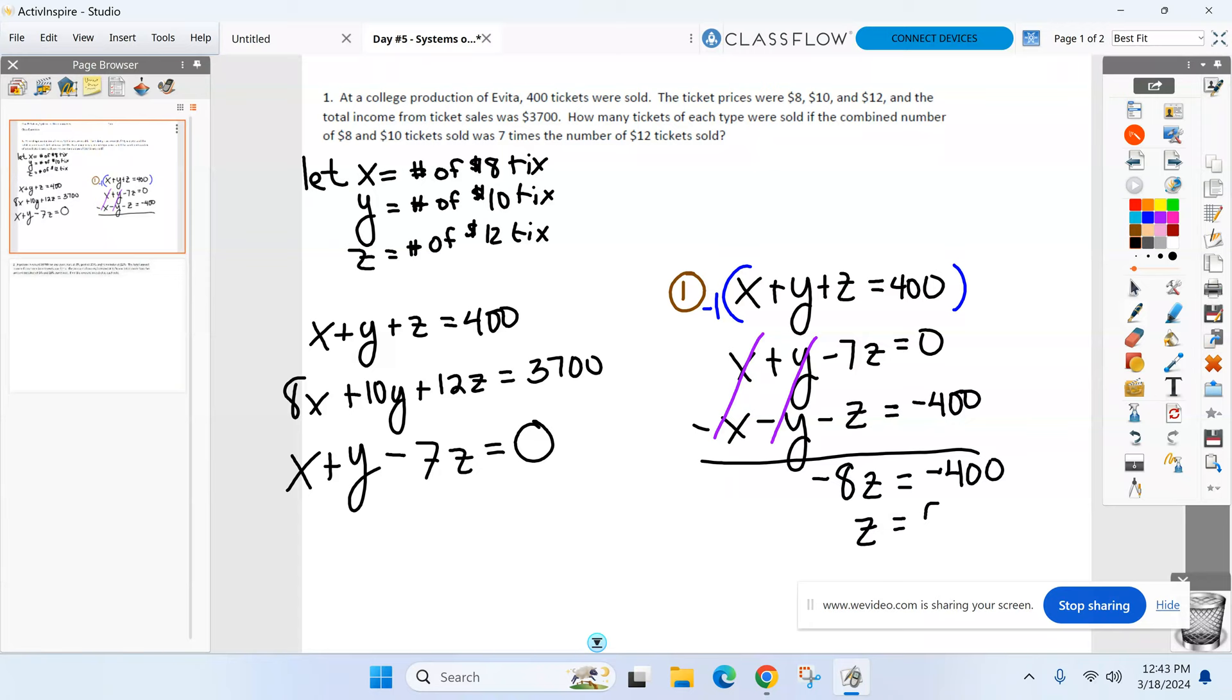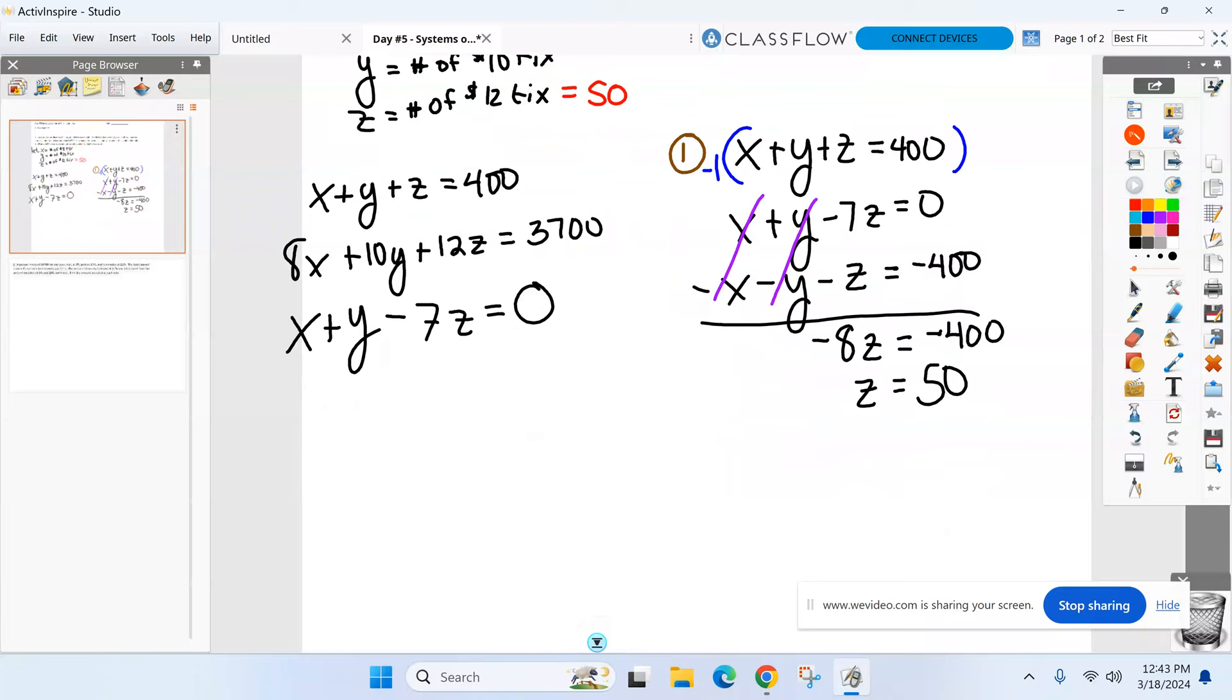50 tickets that are worth $12. Again, sorry if I'm taking it slower than some of you go a little faster. Now, step two. I don't want to pick the same two equations. Pick two new equations, and let's eliminate another variable. We already know Z's 50, right? As you pick these two equations, plug it in. Do we have a preference? We've got to pick two, one and two. As I write one and two, I'm going to plug in 50 though.